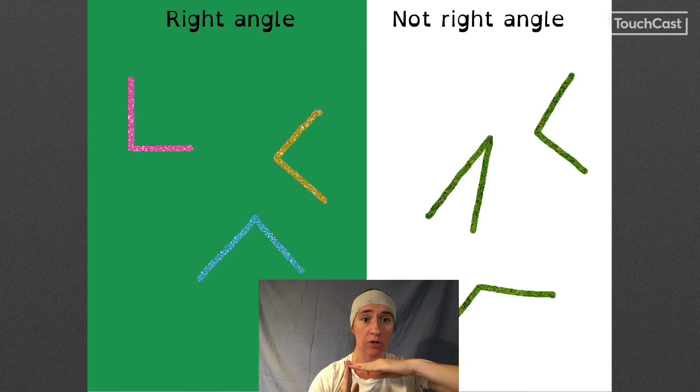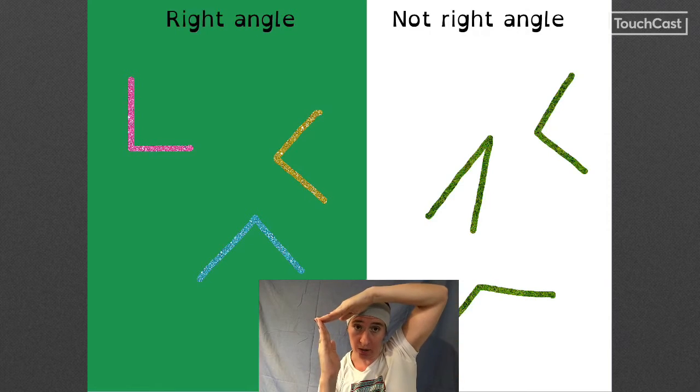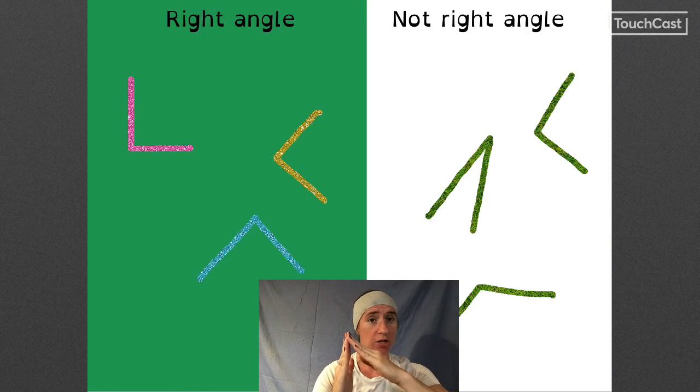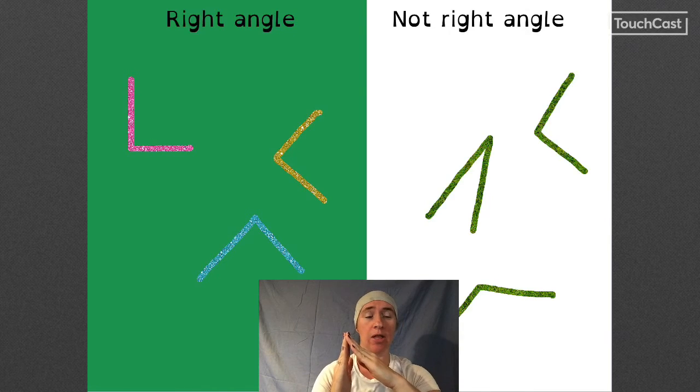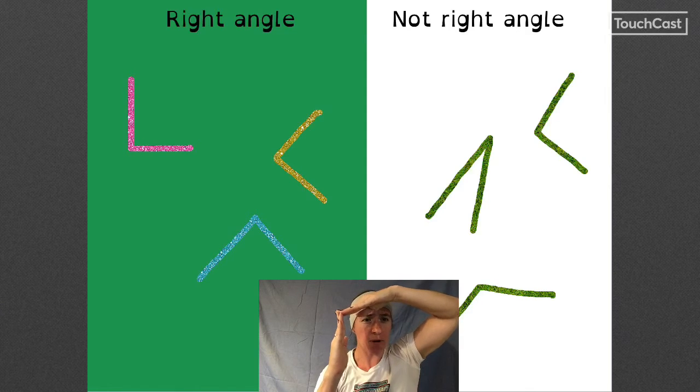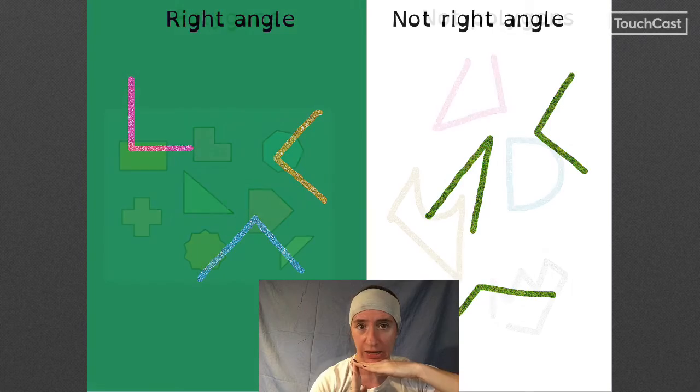If the angle looks like you could fit a piece of paper in there, it's a right angle or a square angle. If it's smaller or greater than that, it's not a right angle. If it's smaller, it's actually called an acute angle. And if it's larger, it's an obtuse angle. But for today, you just need to worry about the right angles.